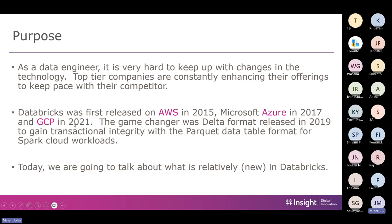The game changer was Delta file format, released in 2019 and also open-sourced. Before it, when you wrote something to a data lake you had to read it, make a change, and write it back — but you'd lock a file and there were no ACID properties. Delta is essentially Parquet with a bunch of logging, giving you atomic, consistent, isolated, and durable transactions. Today we'll talk about what's relatively new in Databricks.